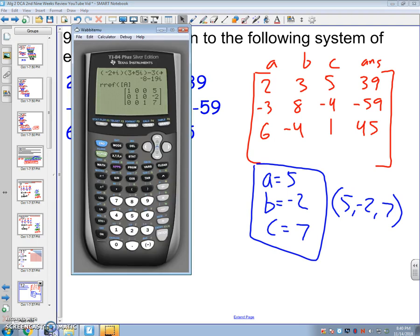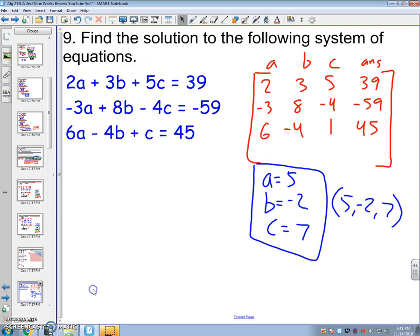All right. Remember, this giving back to is very important. That last row, if it was all 0s, that would be true. 0 = 0. That's infinite solutions. If it was 0, 0, 0, and then 1, meaning no letters, so 0 = 1, that's false, that's no solution.